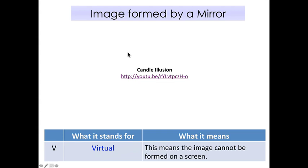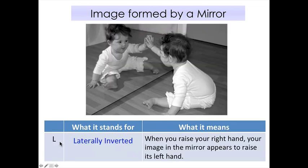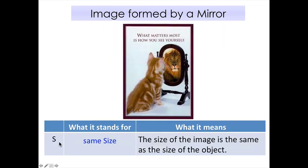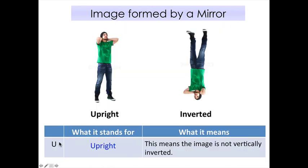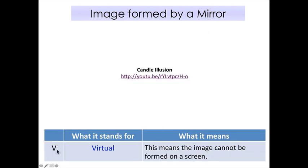Now we are moving on to the characteristics of the image formed by a mirror. This you need to remember and memorize. There are five characteristics represented by the letters V, U, L, D, S. Let's go through them one by one.